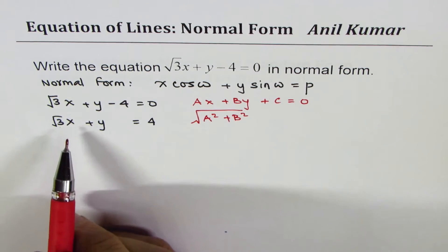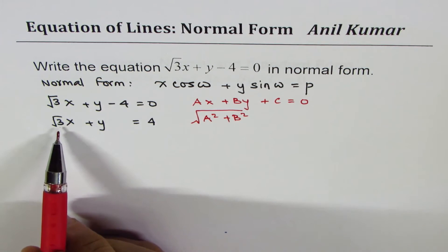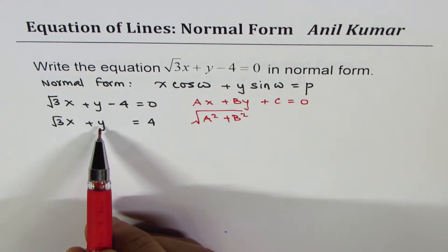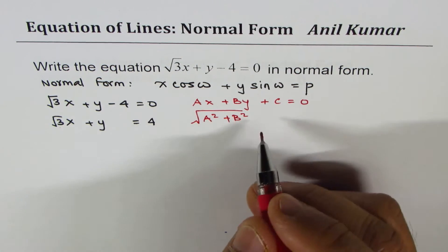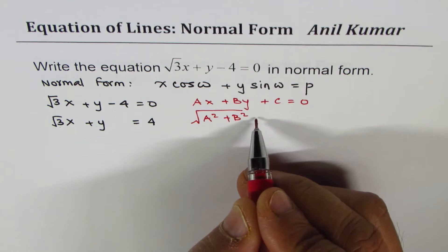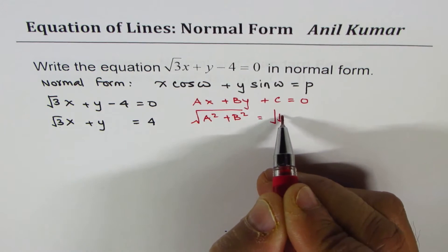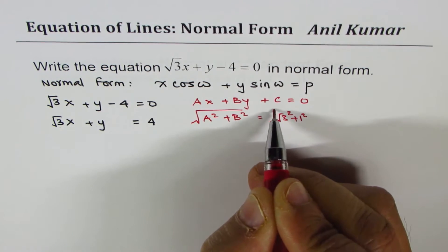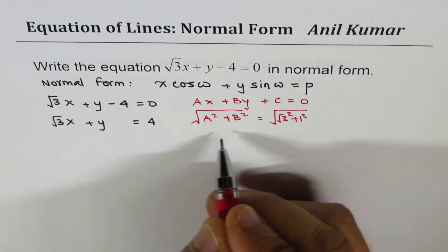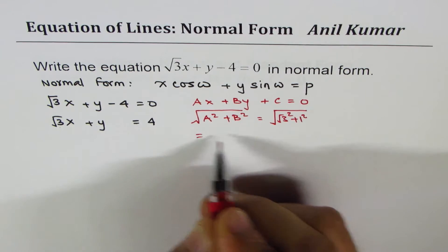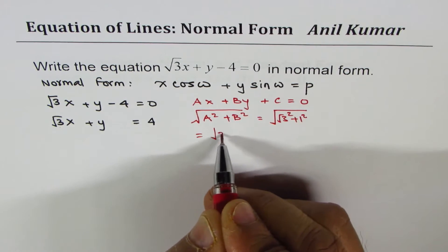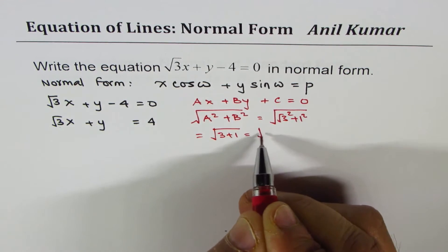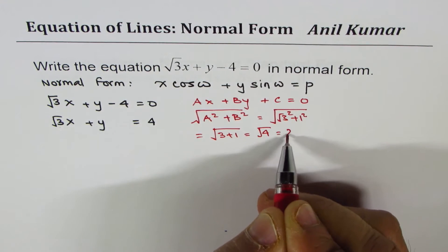In our case, we have √3 as a and 1 as b. So that means we compute √(√3² + 1²) = √(3 + 1) = √4, which equals 2.